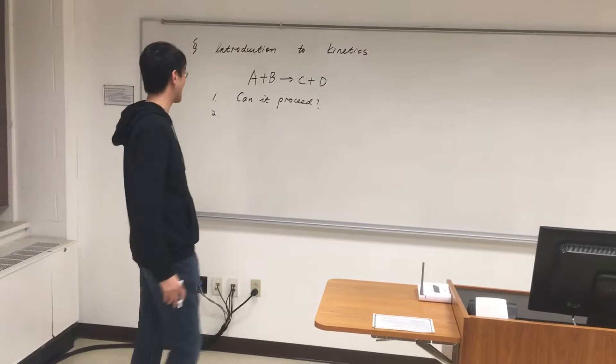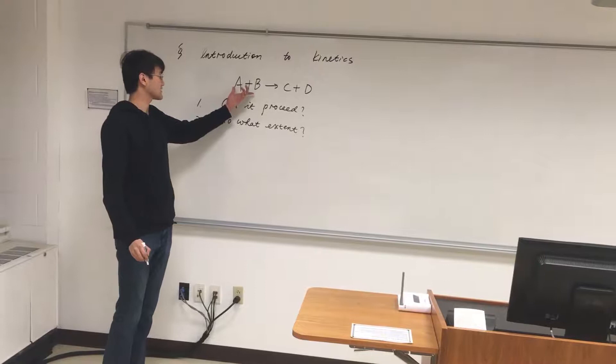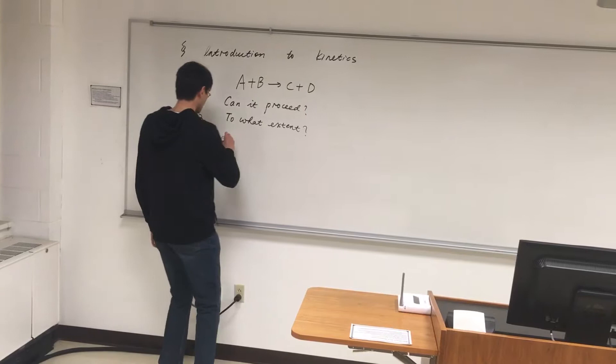Following that, if it can happen, you want to ask to what extent would it happen. In other words, how much of the reactant has been converted to the product, is it 20%, 30% or 80%. The last question is, how fast will this chemical reaction go?